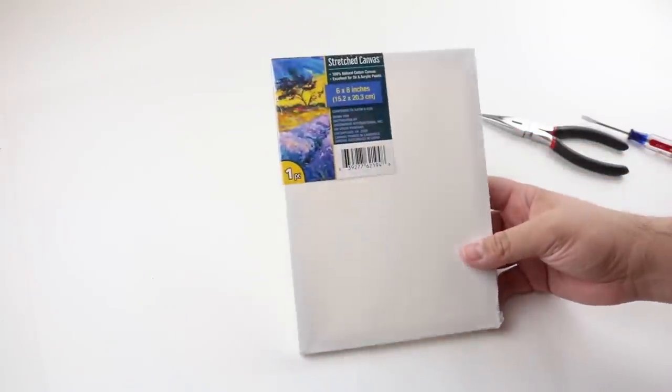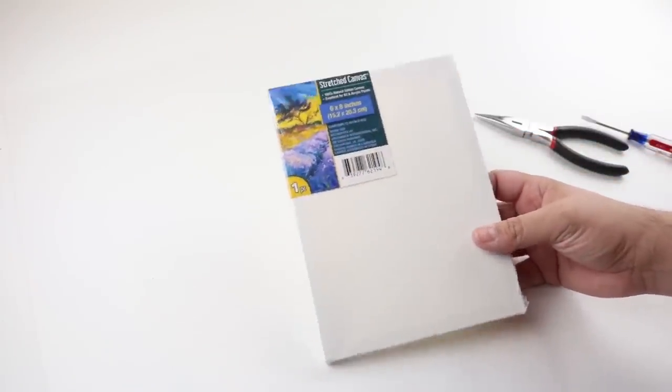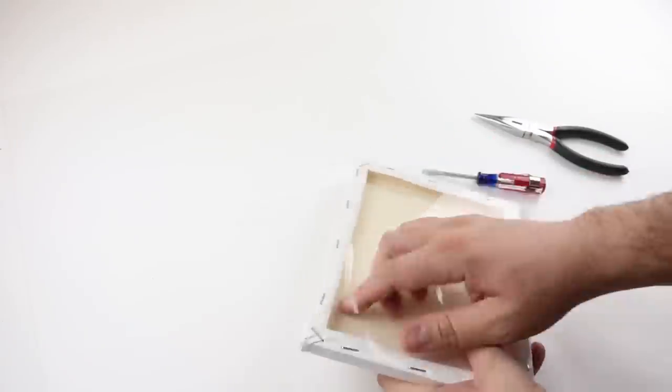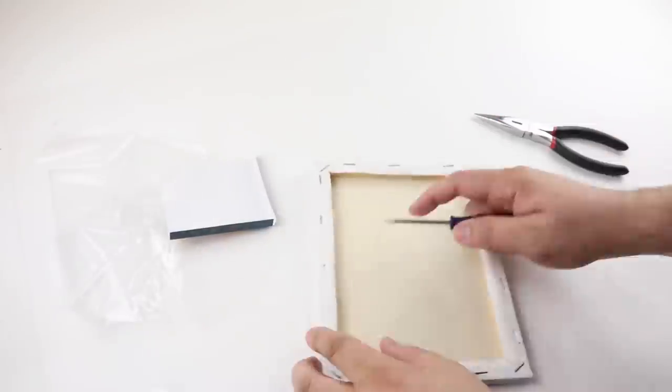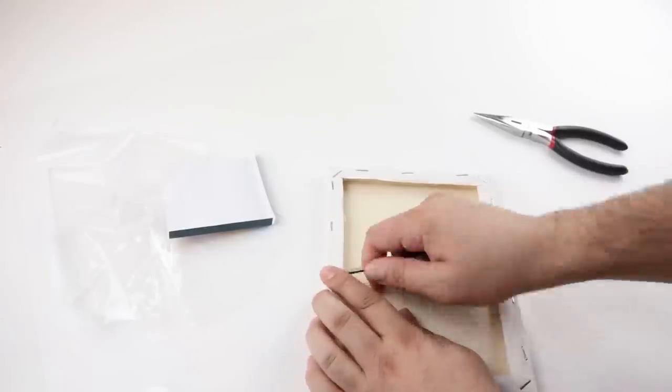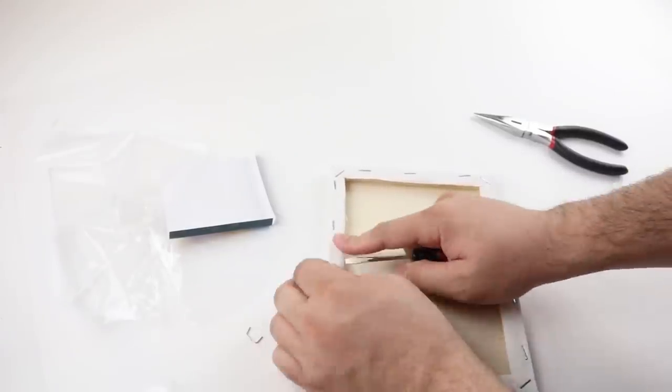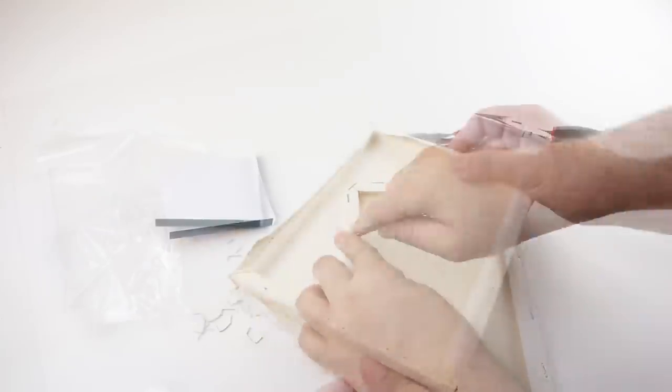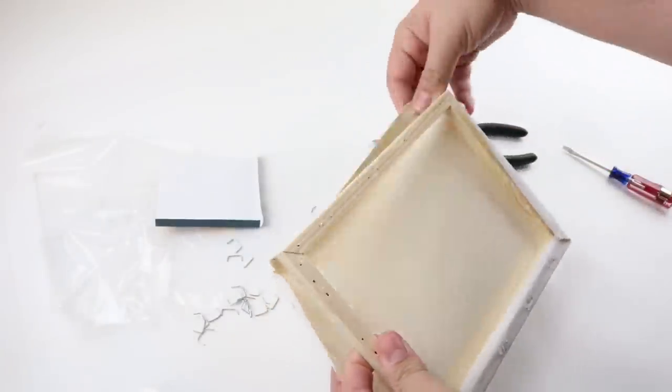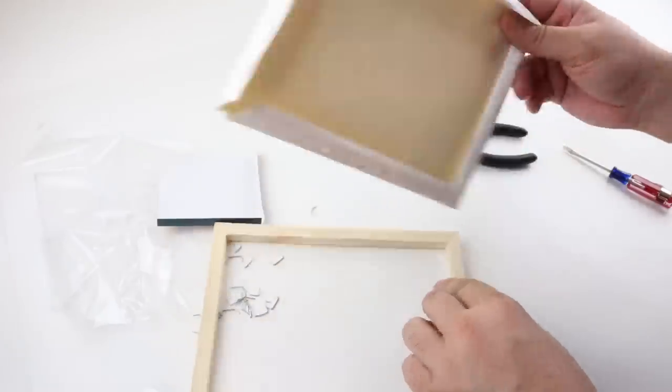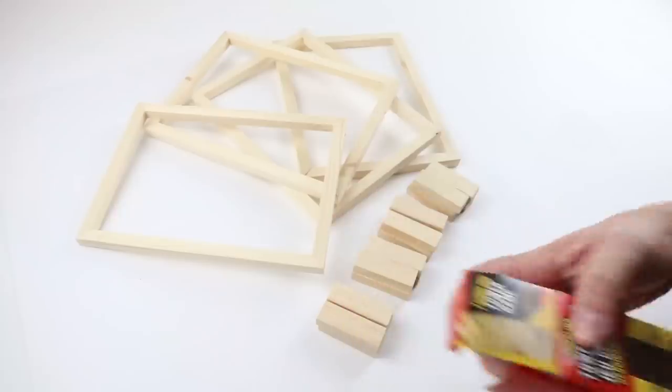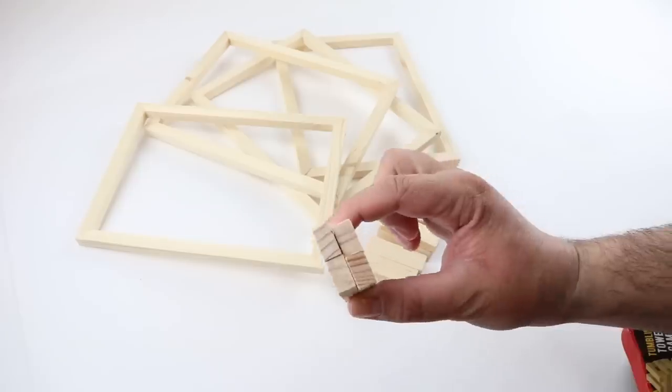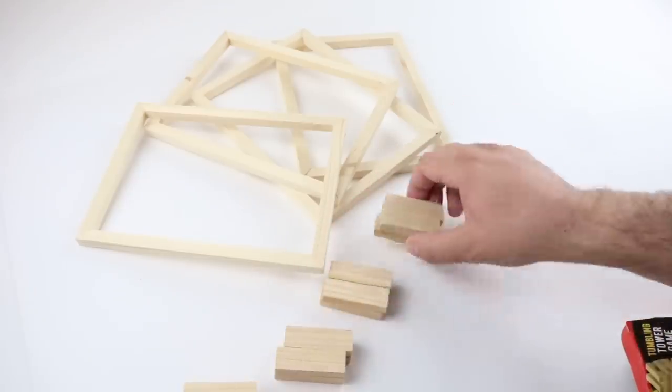For this project we're using the 6 by 8 inch canvas frames, and just like we have been, remove the canvas and just use the frame itself. We did listen to your comments, so we're going to remove the whole canvas from it instead of cutting it out. And I'm interested to know what you guys like to do with that. Let us know in the comments what are some of your favorite projects that you use the extra canvas for. We're also going to be using these tumbling tower blocks. I ended up using 12 of them and 4 of these canvas frames.